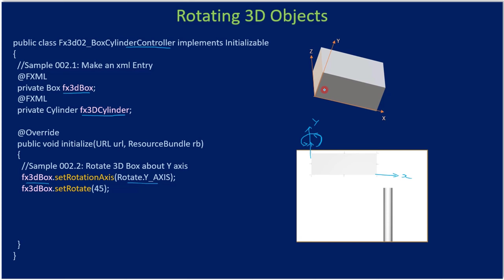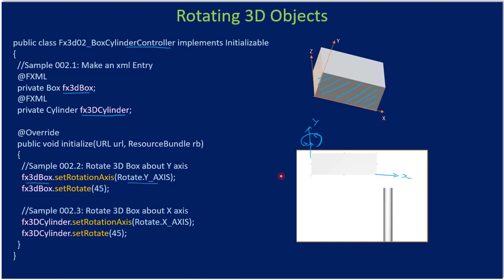Since we are rotating this only in the Y axis, at present you are seeing only one specific face in the FXML designer — that's what we saw in the previous video. After the rotation in the Y axis, you will be seeing the side face as well.